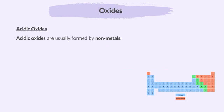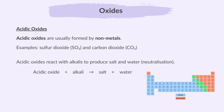Acidic oxides are usually formed by non-metals. Examples include sulfur dioxide and carbon dioxide. Acidic oxides react with alkalies to produce salt and water — that is, neutralization. For example, carbon dioxide, which is an acidic oxide, and sodium hydroxide, which is an alkali, gives sodium carbonate, which is a salt, and water.